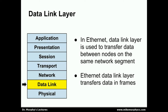We often discuss the data link layer in terms of Ethernet systems. In Ethernet, the data link layer is used to transmit data between nodes on the same network segment — from one node on the same network switch or segment to another, which can then transmit a reply back. So data transfer involves both transmission and reception. In Ethernet and many data link layer implementations, data are transferred in what are called frames — logical units of data of a given, typically fixed, size.